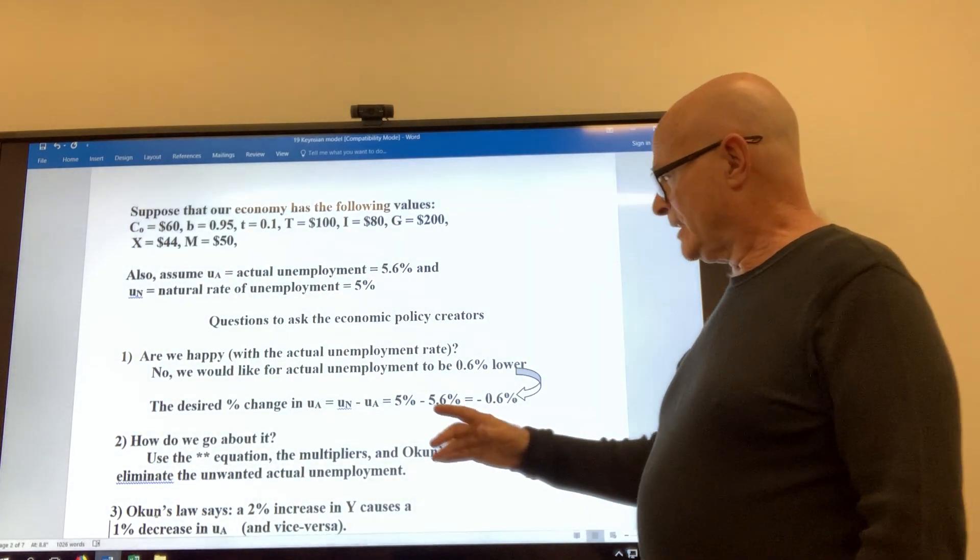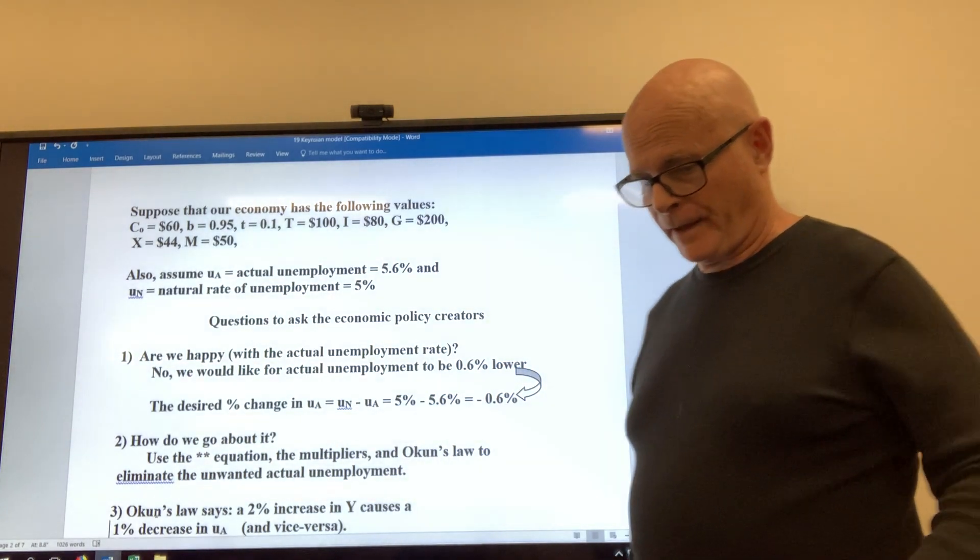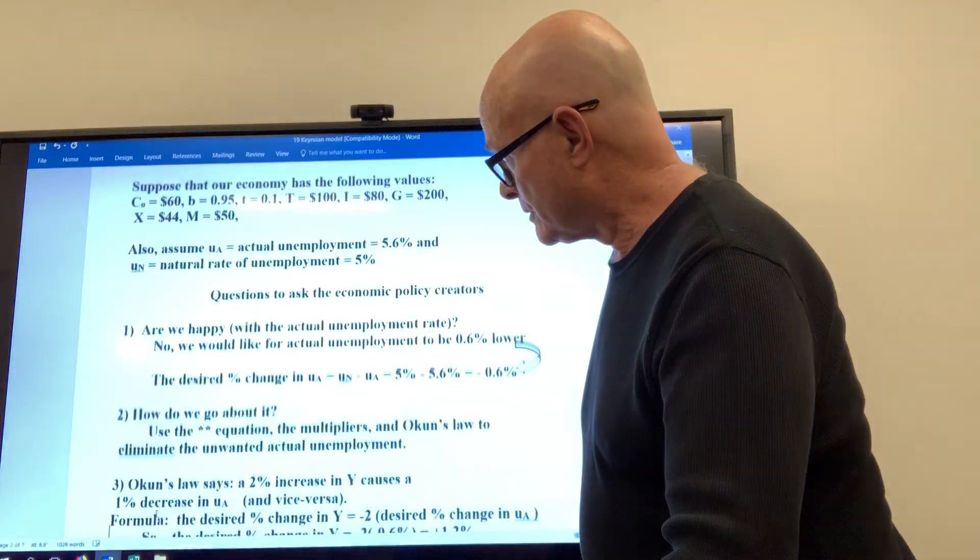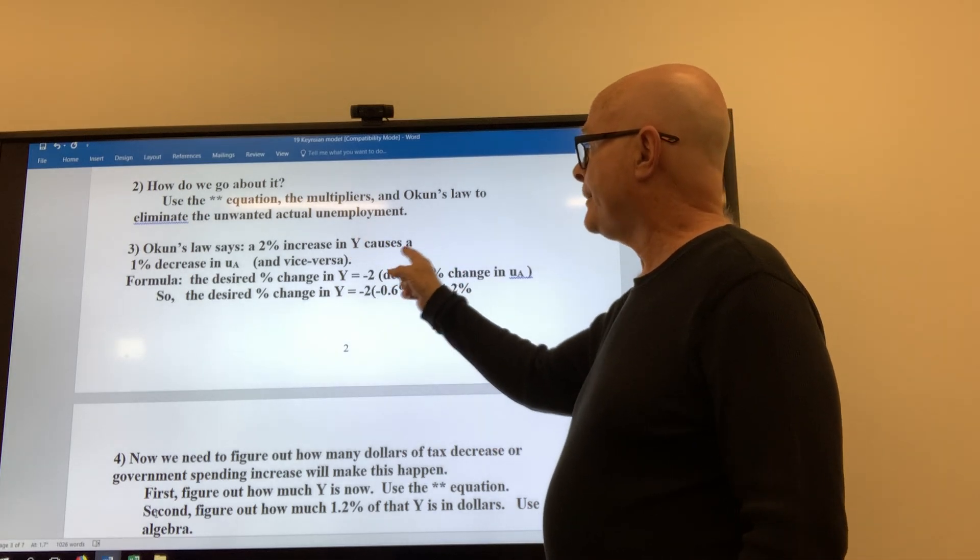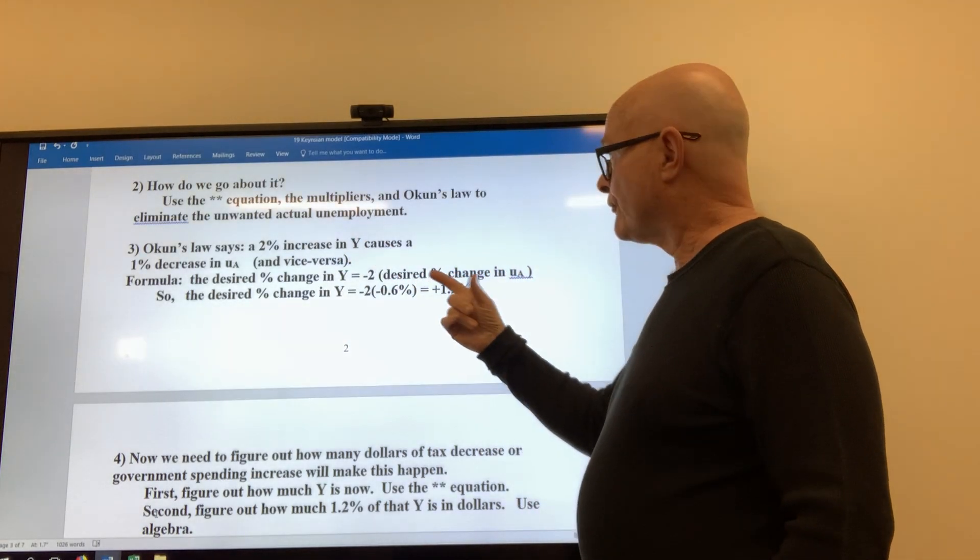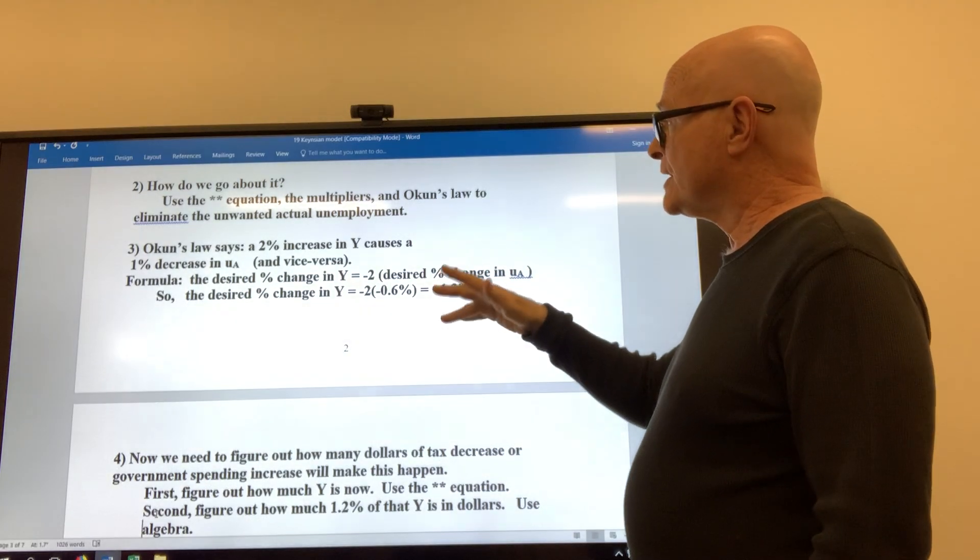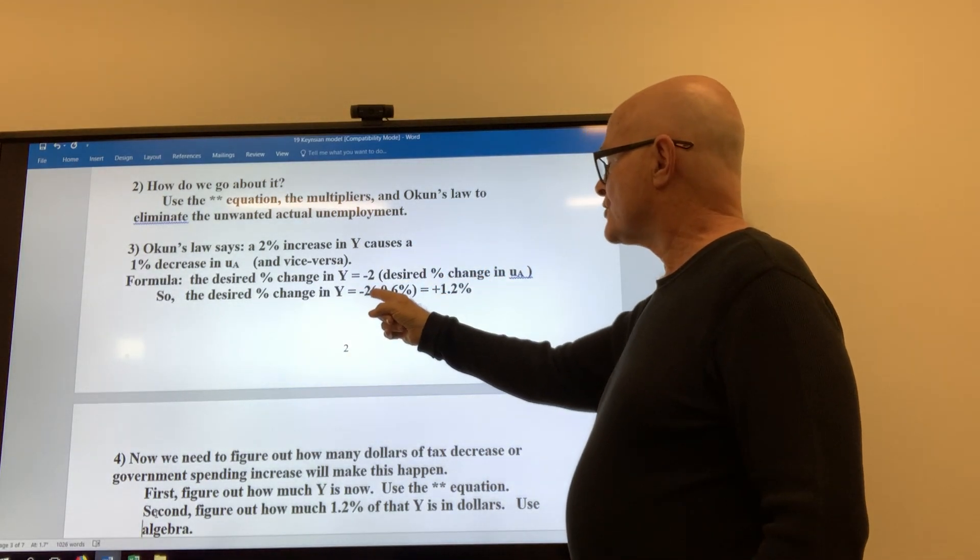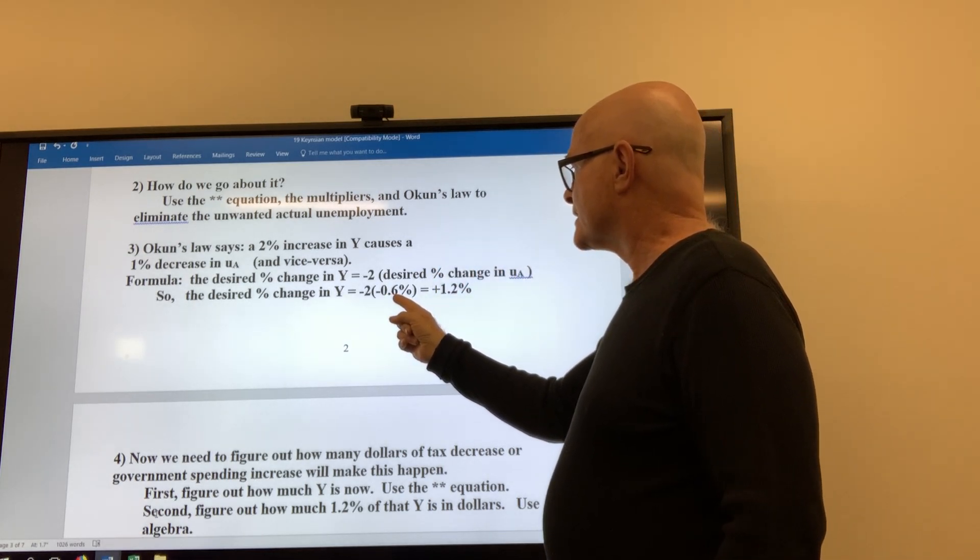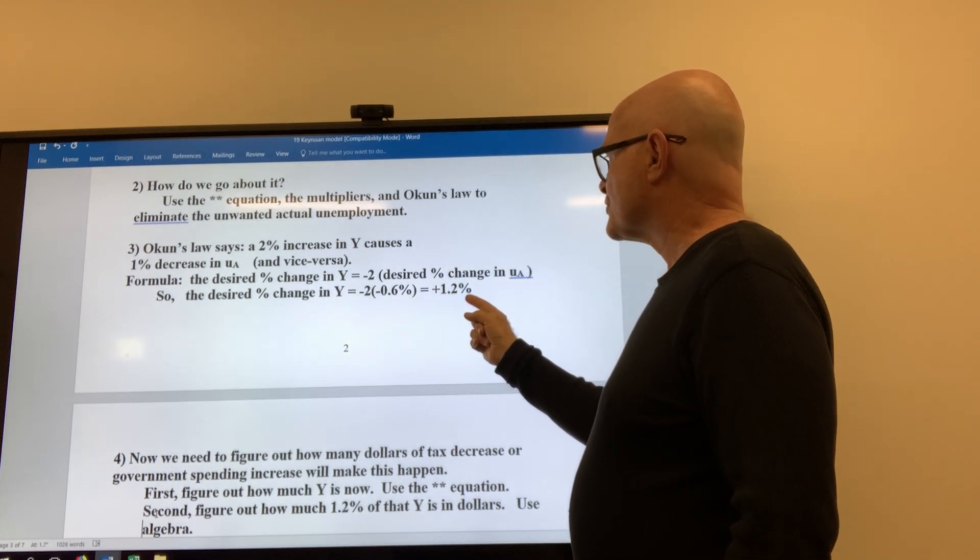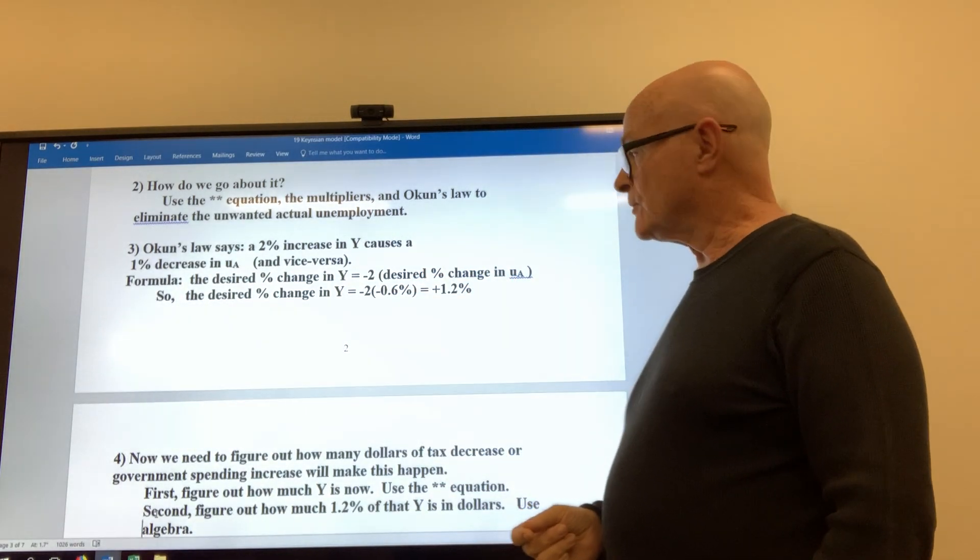Well, we use Keynes' work, the double star equation along with its multipliers, and we use Okun's law that Arthur Okun discovered, and we eliminate the unwanted amount of actual unemployment. Now if we take for our third step there, Okun's law. If you remember, this is Okun's law. The algebraic formula would be this one. So the desired percent change in GDP would be minus two times the desired percent change in your unemployment. So that would be the minus 0.6 percent, so you'd want a 1.2 percent increase in your GDP to get unemployment to drop six tenths of a percent.